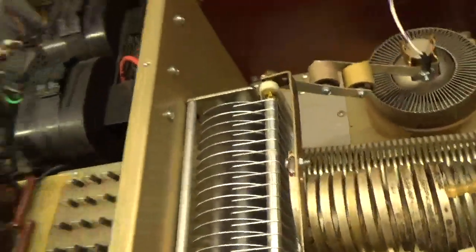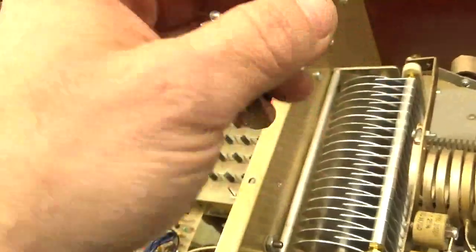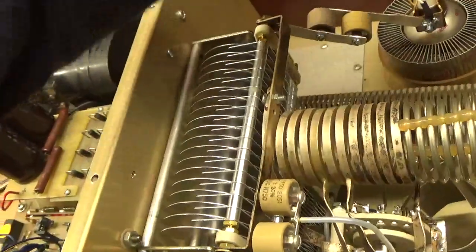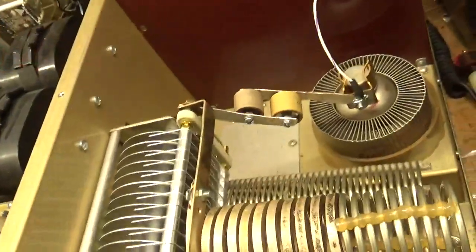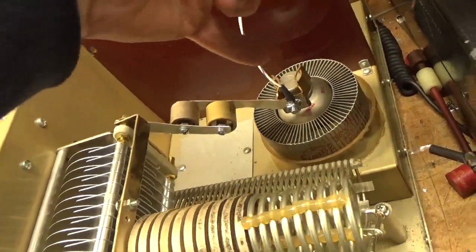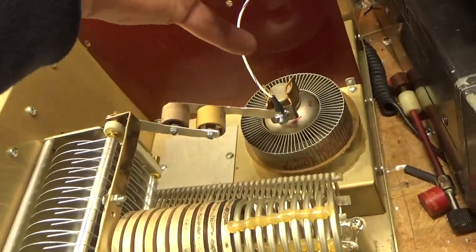He had a plate blocker assembly with these caps. Wrong value, 21,000 puffs in parallel. So I took this out, made a new assembly with silver-plated copper strap, copper, or brass I should say, I think it's brass. Or maybe it's plated anyway.